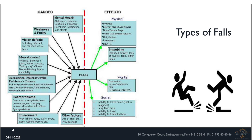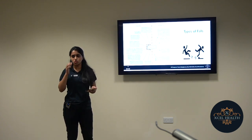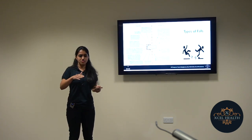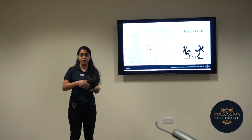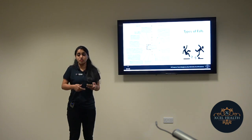The next important cause is weakness and frailty, which is as simple as the aging process that happens on a regular basis. Everybody on this earth tends to age every single day. In the initial days, we tend to lose cells, but it is also possible that we regain those cells we lose on a regular basis.